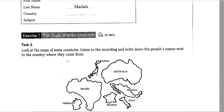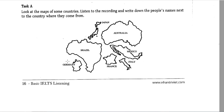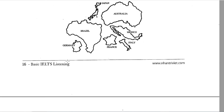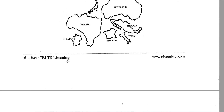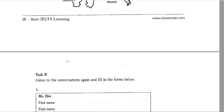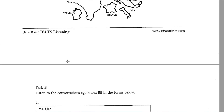Exercise 7: The maps of some countries. Task A: Look at the maps of some countries. Listen to the tape and write down the people's names next to the country where they come from. Conversation 1: All right, Ms. He. Let me just check this information. Is your first name spelled S-U-E? No, it's not. It's spelled S-U — no E at the end. It's not an English name.